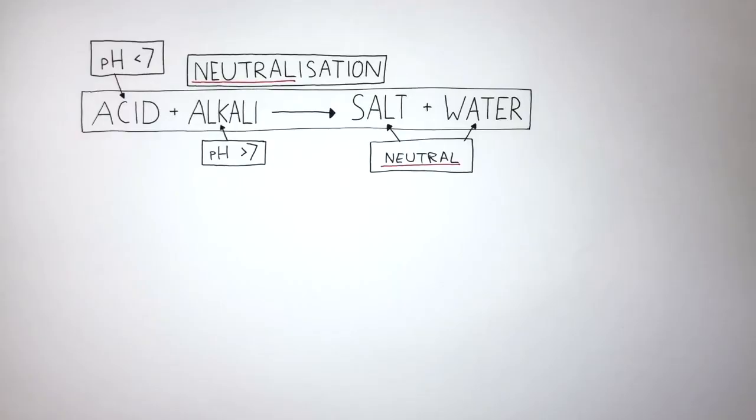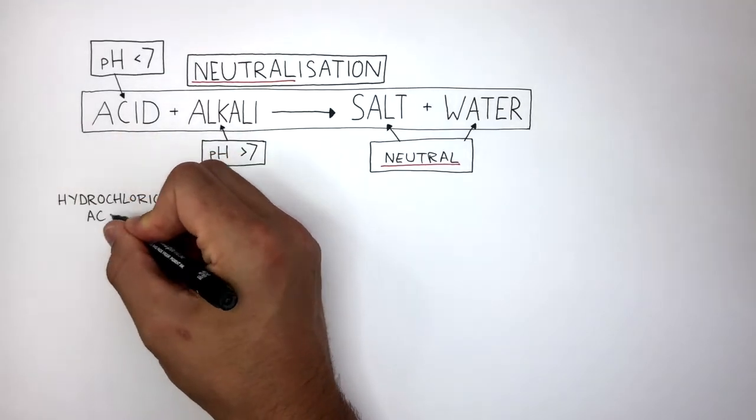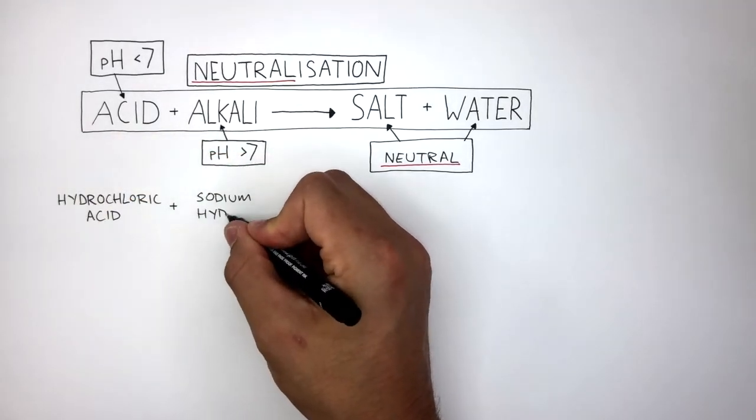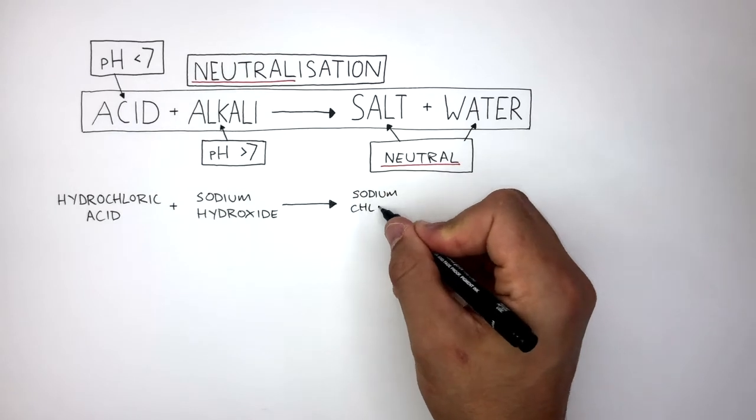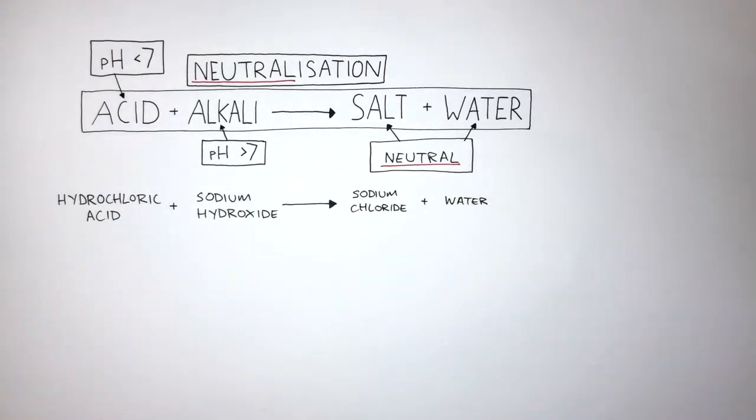An example of an acid being neutralized by an alkali is hydrochloric acid reacting with sodium hydroxide to form sodium chloride and water. Remember, alkalies are just bases which are soluble in water.